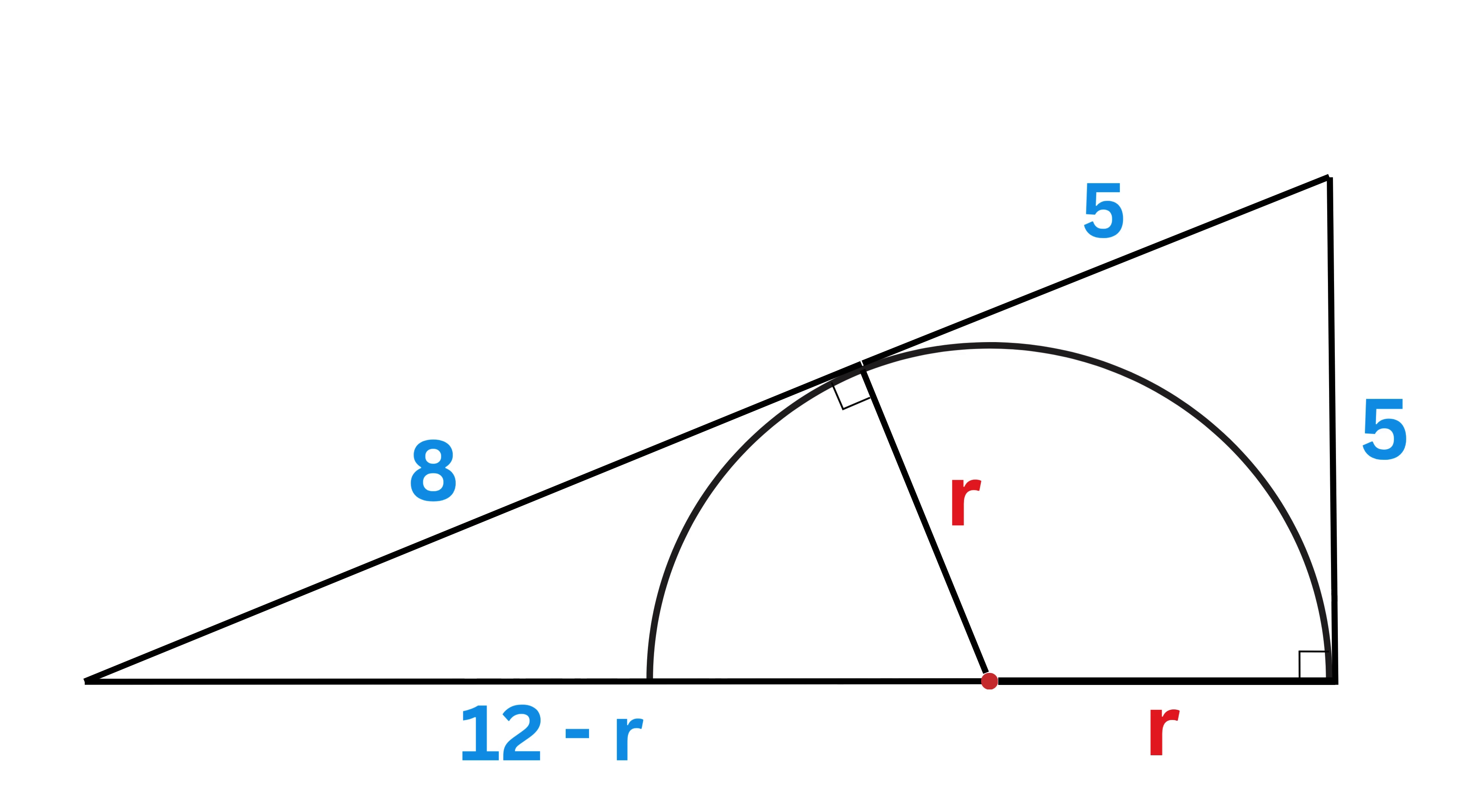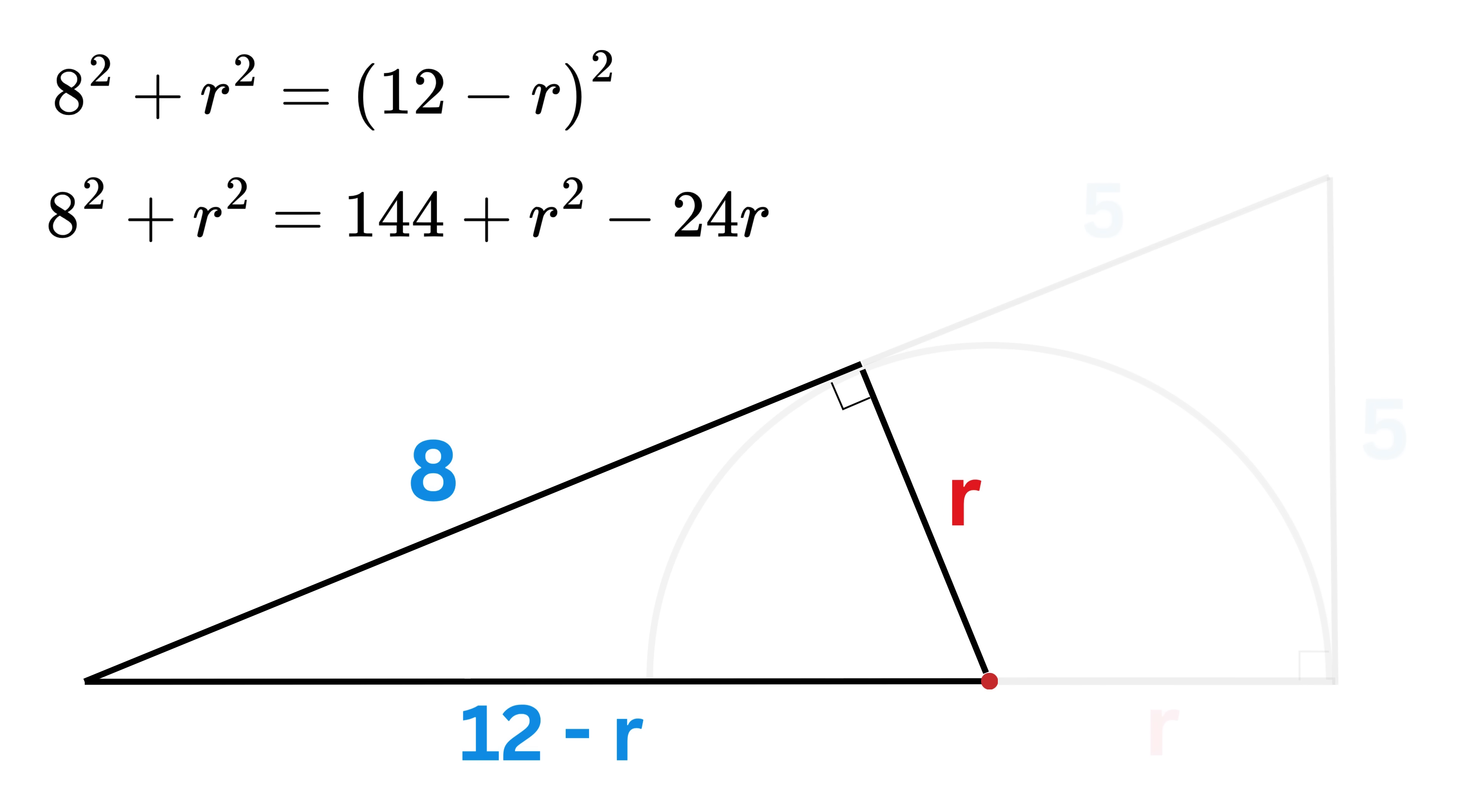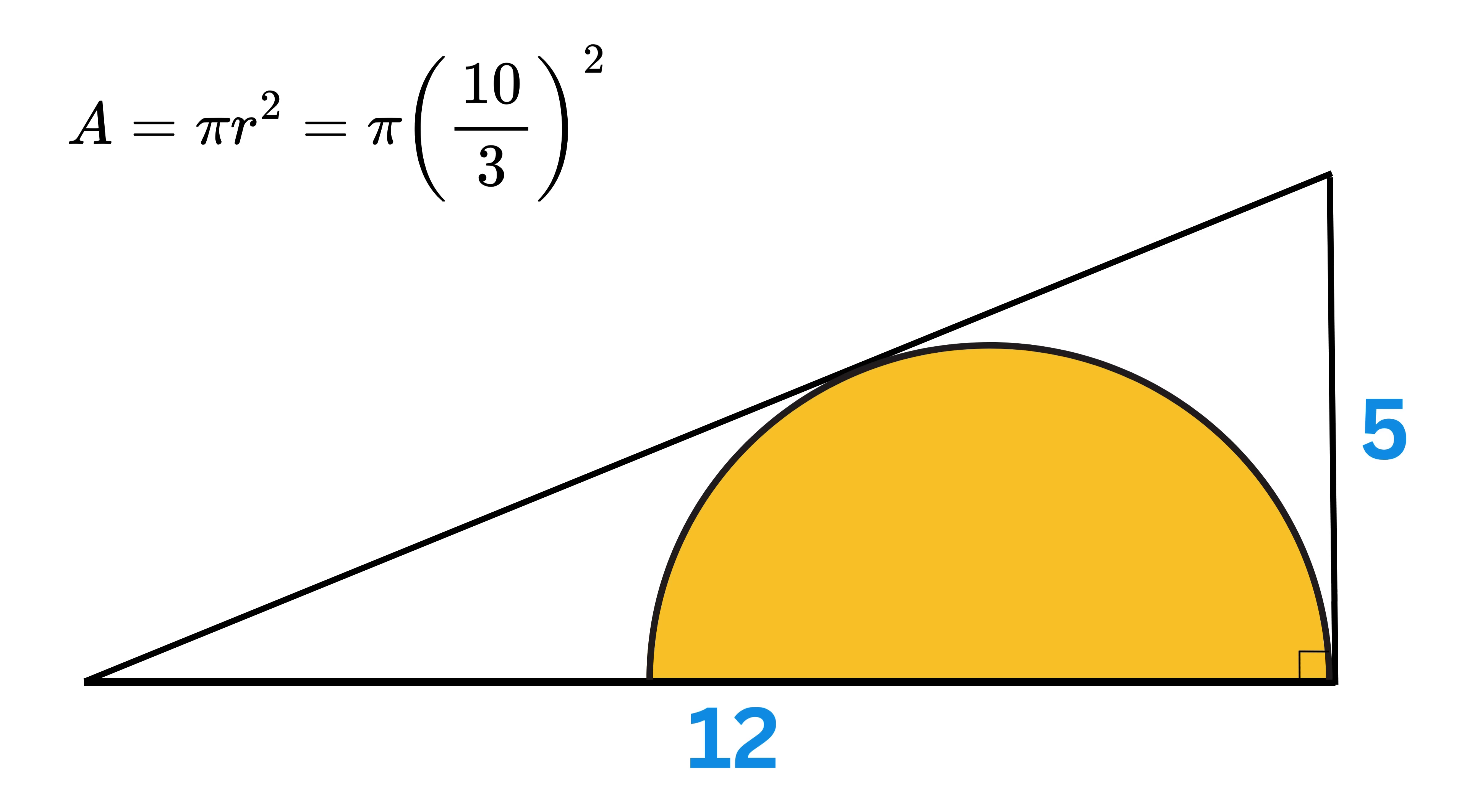Yippee! Everything is super easy now. Use the Pythagorean theorem here to get 8² plus R² equals (12 minus R)². Expand this to get this. Oh look, R² gets cancelled and we're left with this. Thus, R equals 80 over 24, which simplifies to 10 over 3, and that's it!